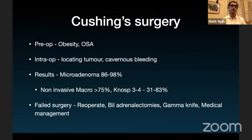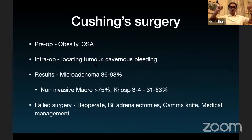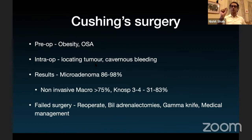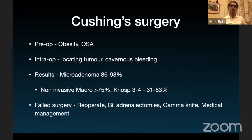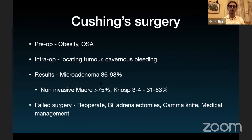Pre-operatively for Cushing's, watch out for obesity and OSA and be careful with anesthesia. Intra-operatively, there is always difficulty locating the tumor — microadenomas with Cushing's are more often on the lateral extent, very close to the cavernous sinus. It's not uncommon to get bleeding from the cavernous sinus. Results of surgery for microadenomas are over 90% on average, slightly less for macroadenomas, declining somewhat with higher grades but overall good.